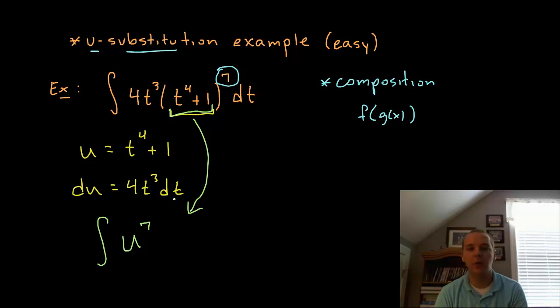Now I don't want a mismatch of terms. I don't want u to the 7th and then other terms in terms of t like 4t cubed dt. But I notice something: 4t cubed dt is the same as du, those are the same thing. So I can take those out and swap those with du.